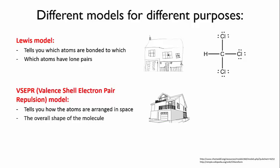VSEPR stands for valence shell electron pair repulsion. And in the next video, I'll explain what that means and how the theory works. The VSEPR model can tell you about how the bonded atoms are arranged in space, and therefore what the overall shape of the molecule is.